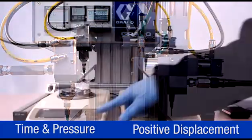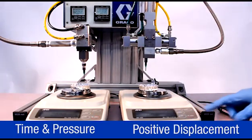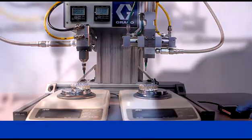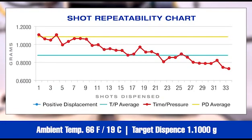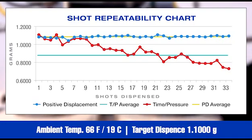Temperature and shear sensitivity could be reflected in the test results. With this chart, you can see the inconsistencies in the time and pressure results indicated by the red line. The blue line shows the accuracy and reliable dispense of our positive displacement system.